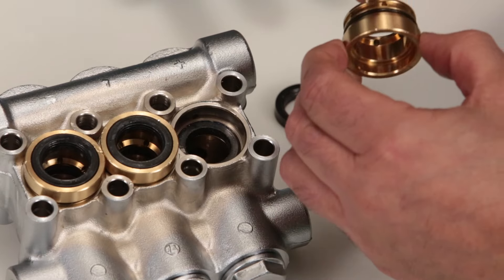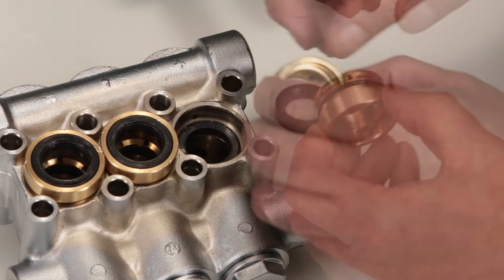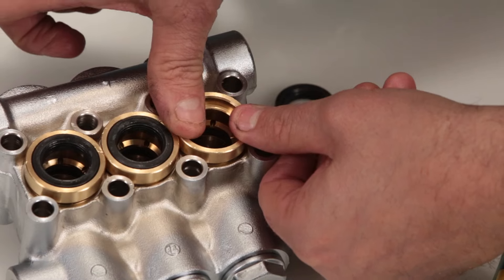Apply liquid gasket to the o-ring on the seal case. Install the seal case with the o-ring down into the manifold and press into place.